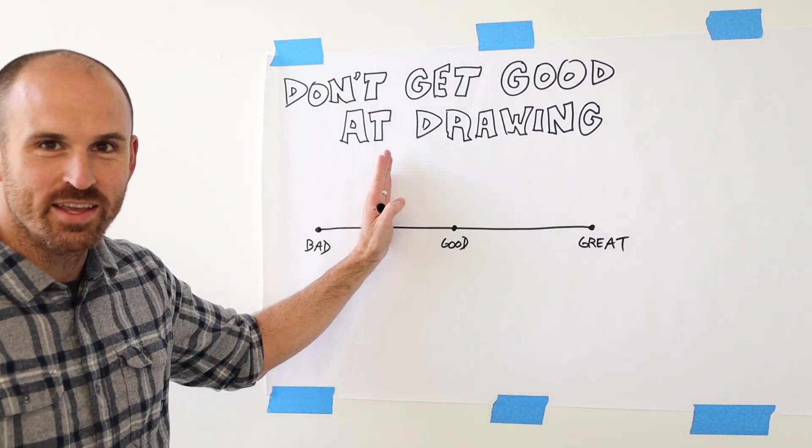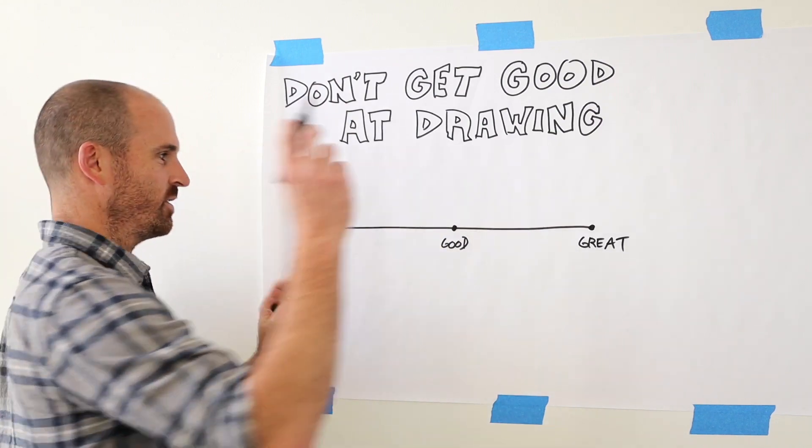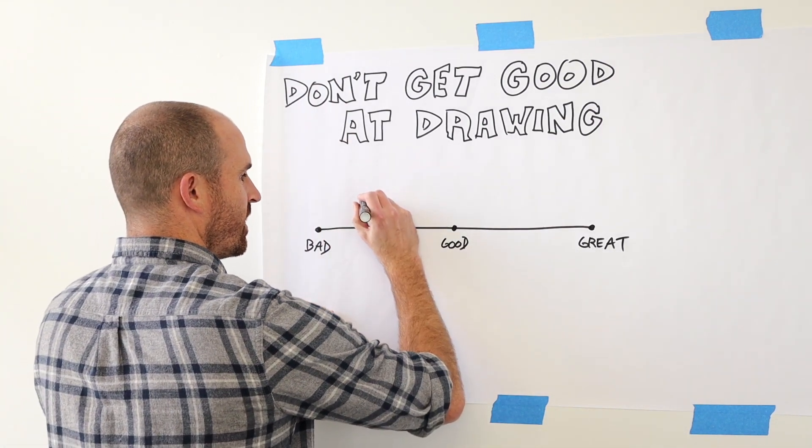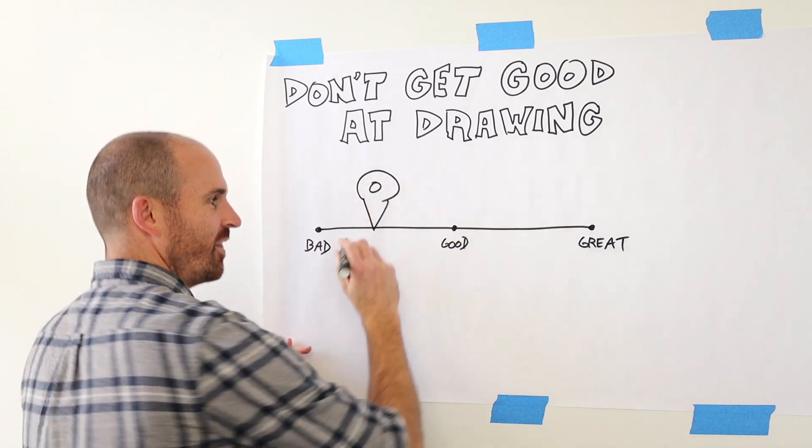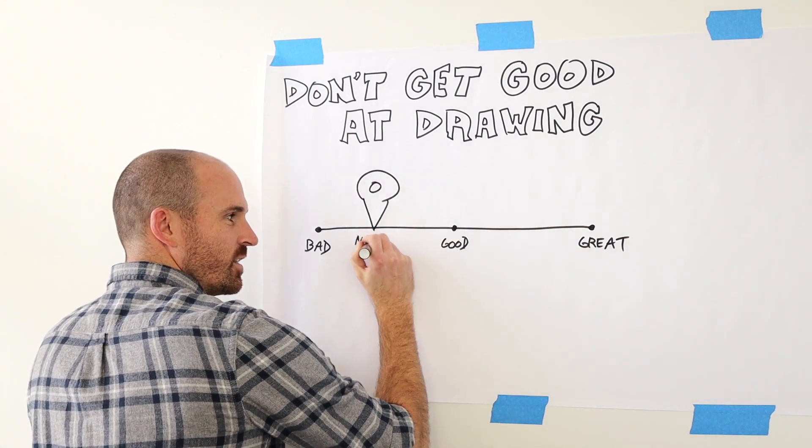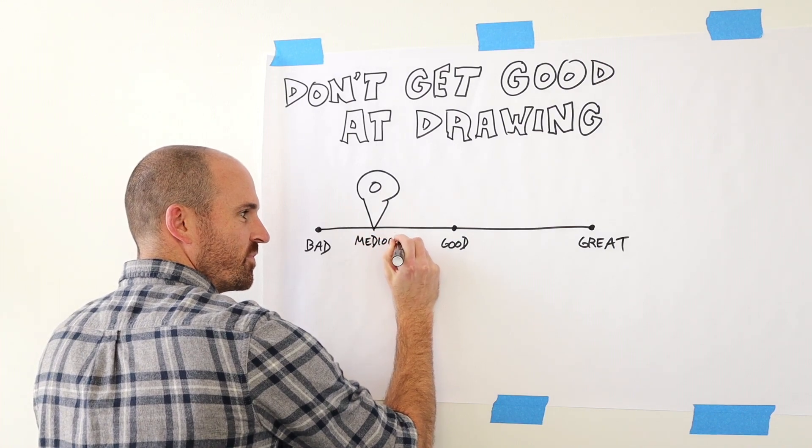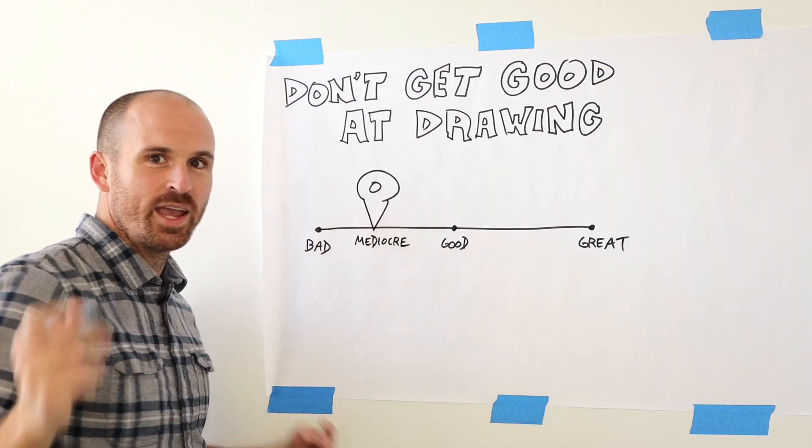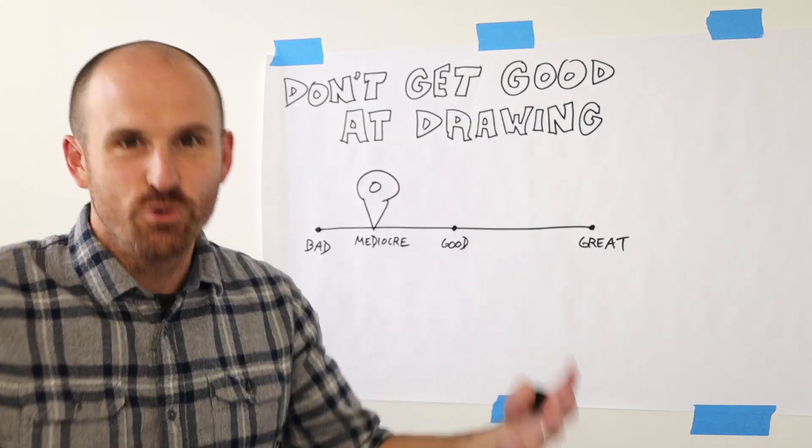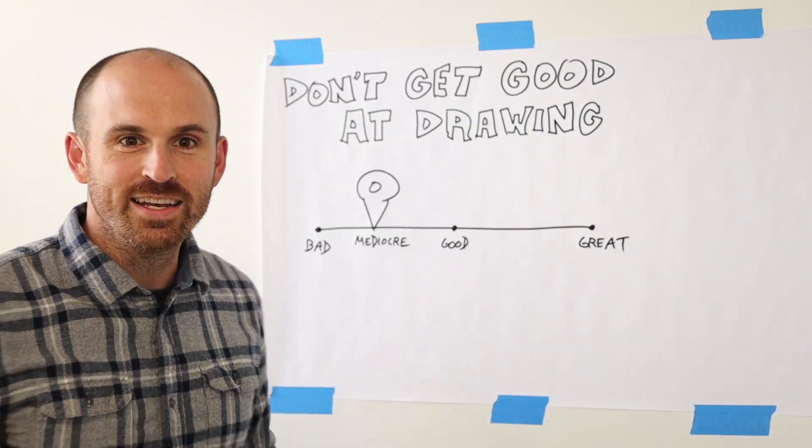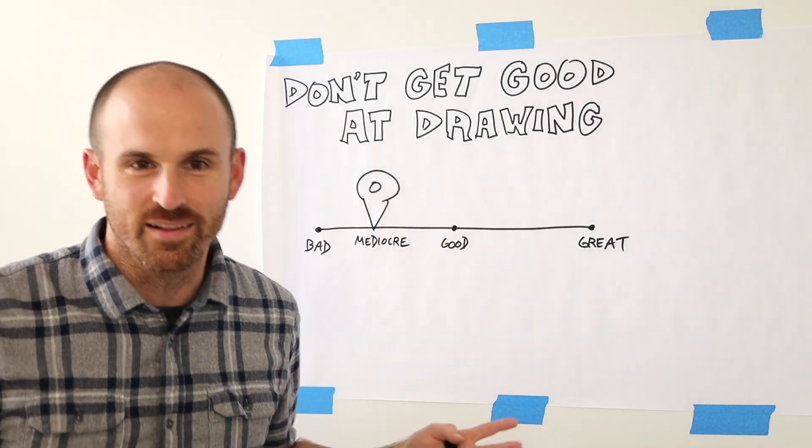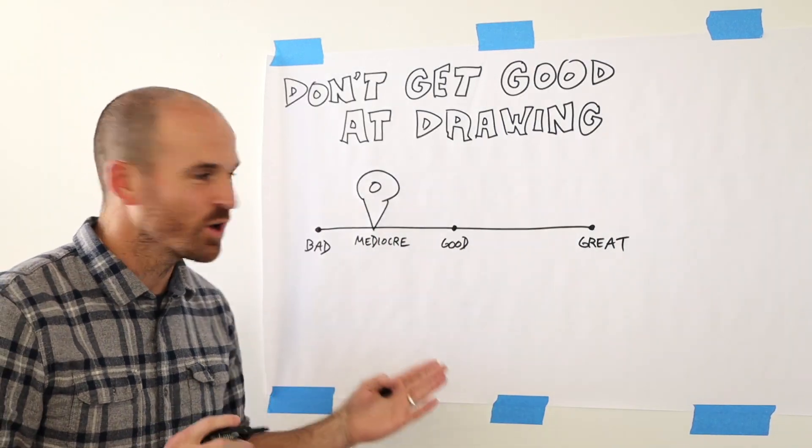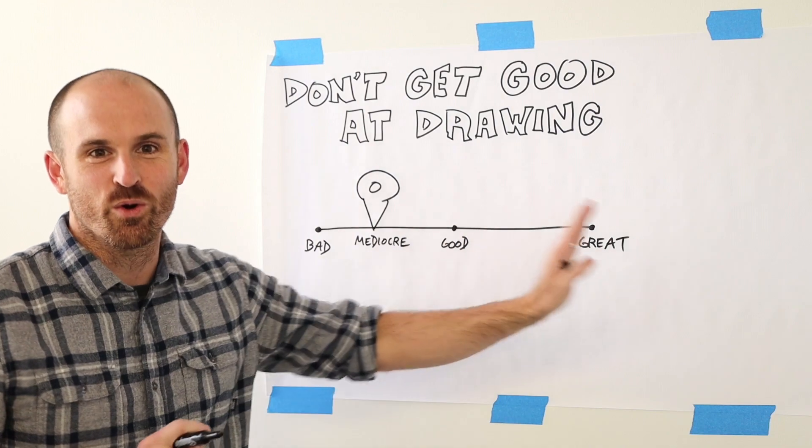So let's label this as a place of importance as a location icon here and let's call it mediocre. You can successfully, usefully sketch out ideas as a mediocre drawer. Let's define a little bit what I mean by mediocre as opposed to good or great.